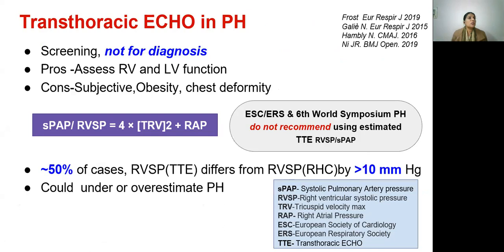Regarding the role of transthoracic echo in pulmonary hypertension — remember, this is for screening, not diagnosis. Advantages are that echo helps assess RV and LV function. However, disadvantages are that it is subjective and patient-related factors such as obesity and chest deformity can interfere. Echo does not give mean pulmonary artery pressure; the value used is the systolic pulmonary artery pressure (RVSP), derived from tricuspid velocity and right atrial pressure. Current guidelines do not recommend using this value because in 50% of cases, the RVSP from echo differs from right heart catheterization values by more than 10 mmHg, leading to underestimation or overestimation.